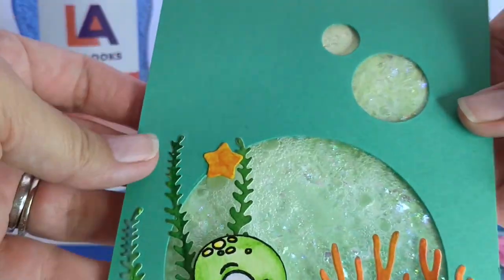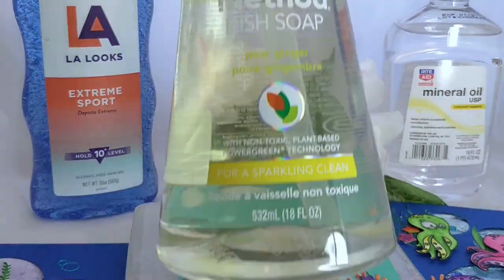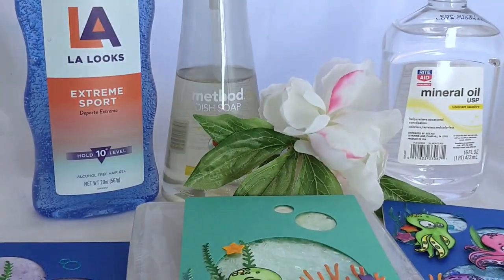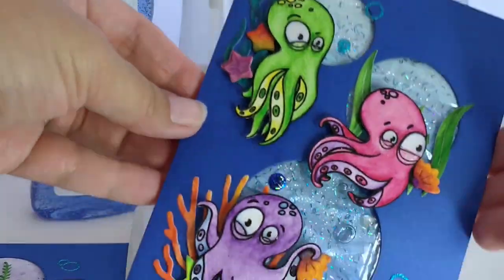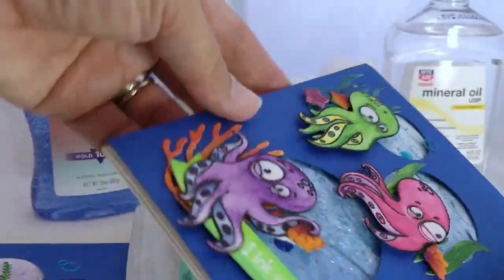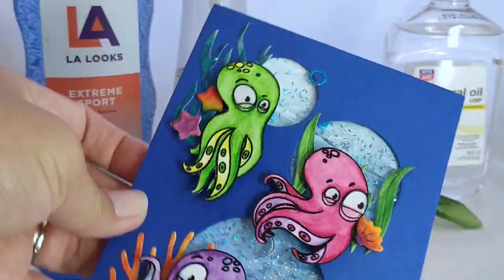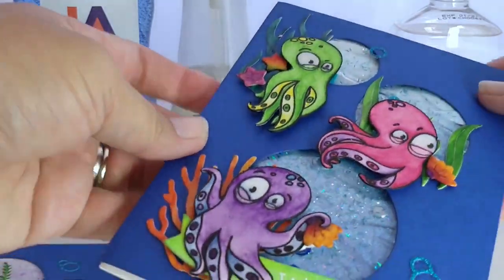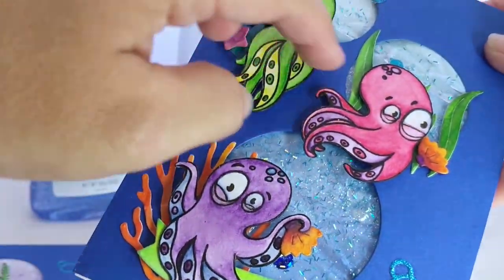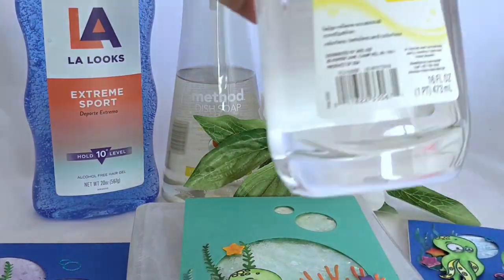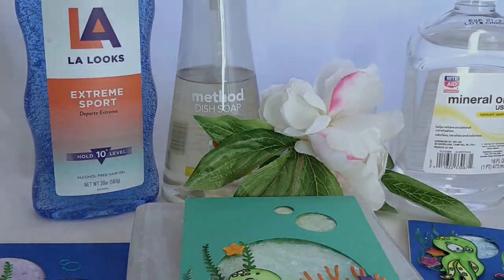The three fillers we're going to be talking about are hair gel, liquid dish soap, and mineral oil. Each one has a different thickness or viscosity so you'll get more or less movement and they can be easier or more difficult to work with depending on which one you're using, especially the mineral oil, that can be a little challenging.